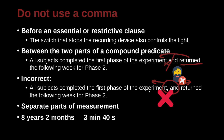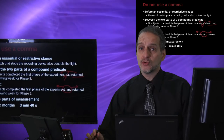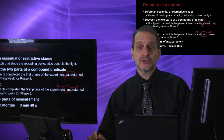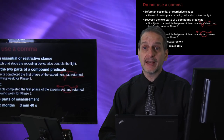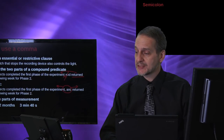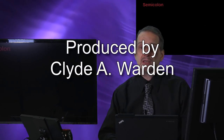Do not use a comma to separate parts of a measurement. For example, if you wrote 'eight years two months' or 'three minutes and forty seconds,' you would not use a comma there — just leave it as a space.